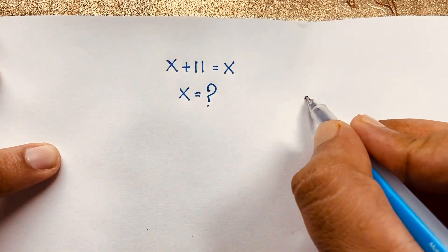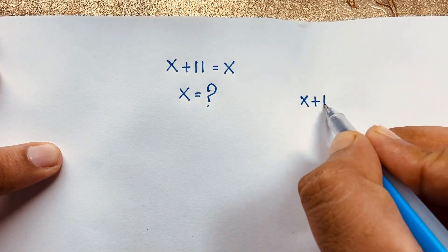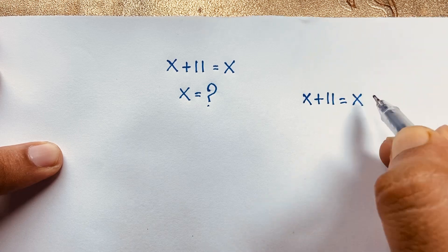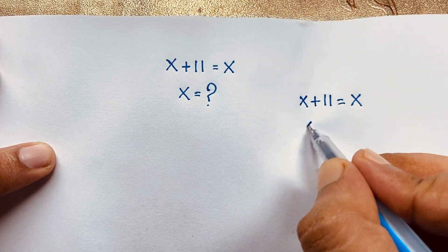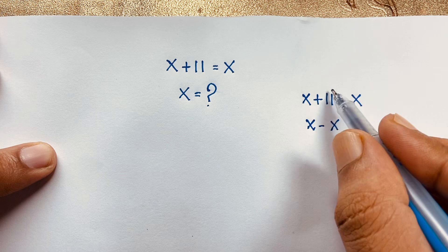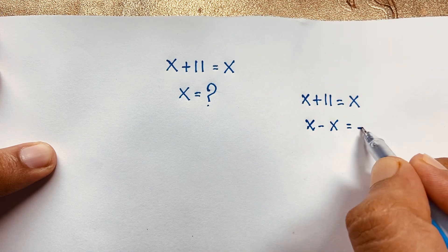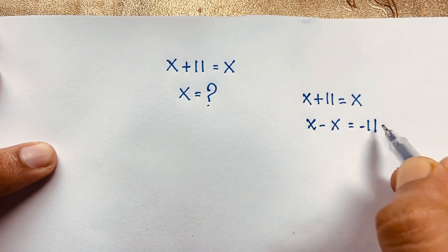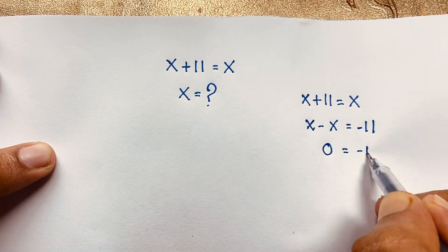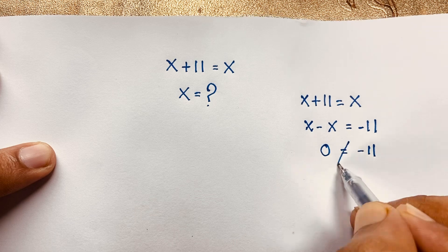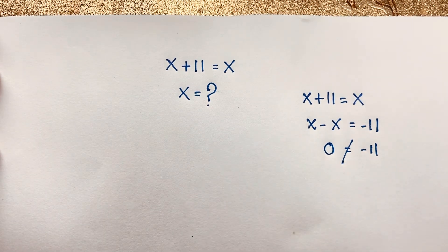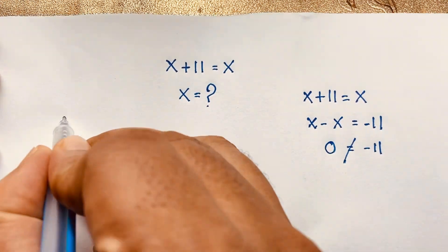Our question is x plus 11 is equal to x. You can see this x move on here, so it will be x minus x is equal to negative 11. So this is 0 is equal to minus 11. It is not equal, so it is not possible. But how to solve this interesting math question?